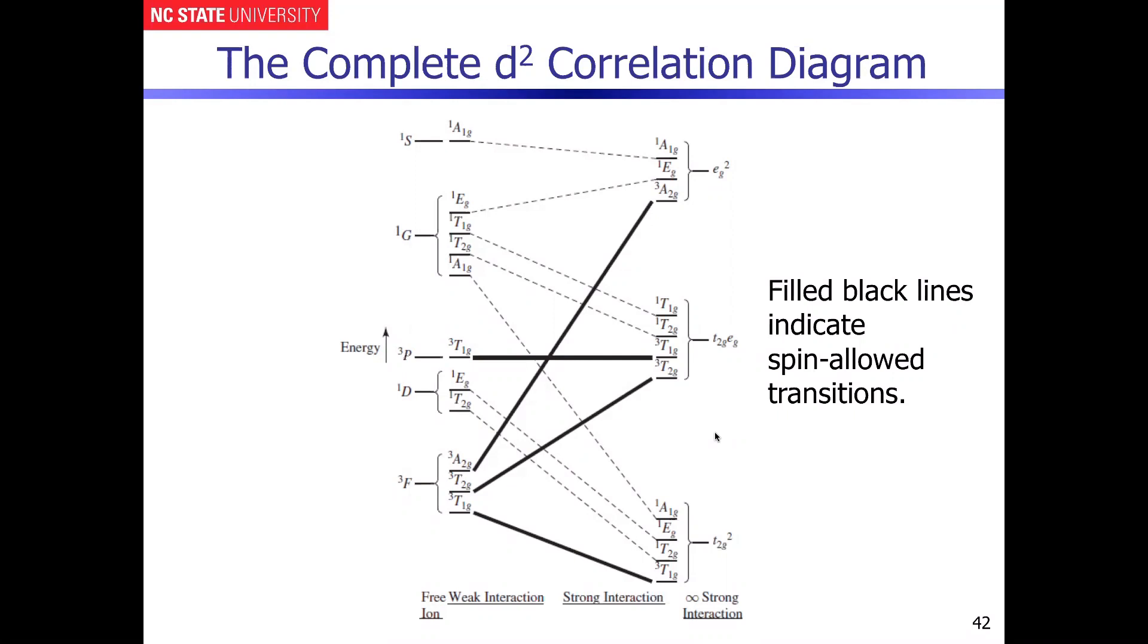So let's take our correlation diagram and turn it into a Tanabe-Sugano diagram. What we're going to do is basically take this line that's right here and effectively turn it so that it becomes a straight line that runs right across the correlation diagram.